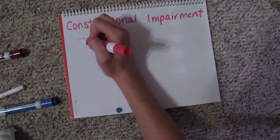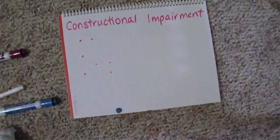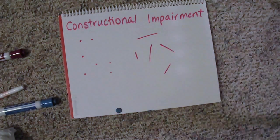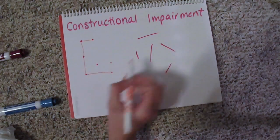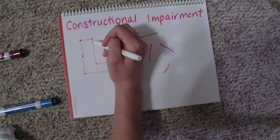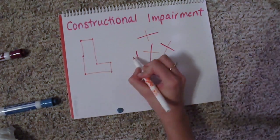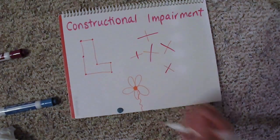Treatment for constructional impairment can involve having the patient draw lines between points or lines through other lines, connecting the dots to make letters or shapes, and copying or making their own simple drawings.